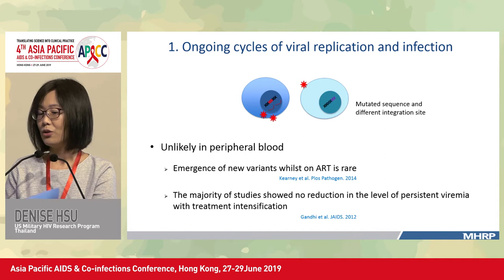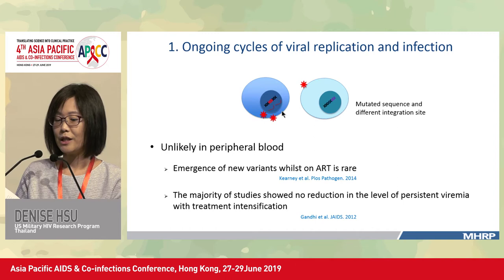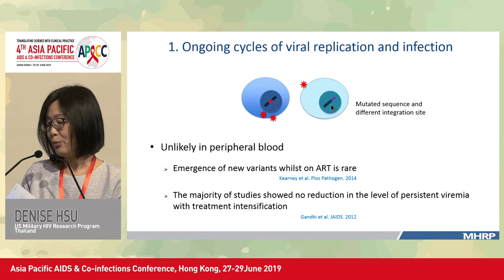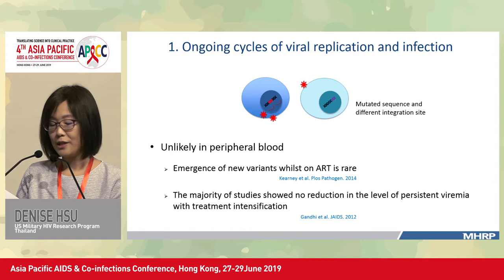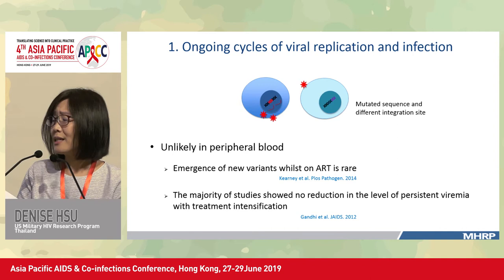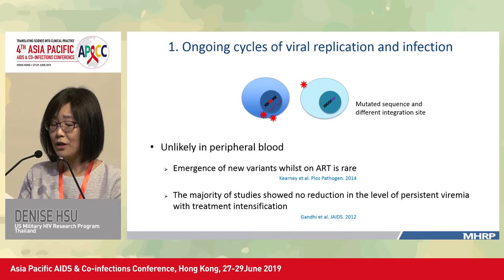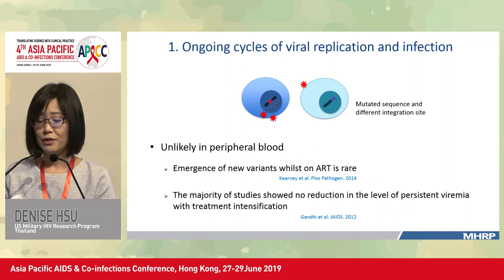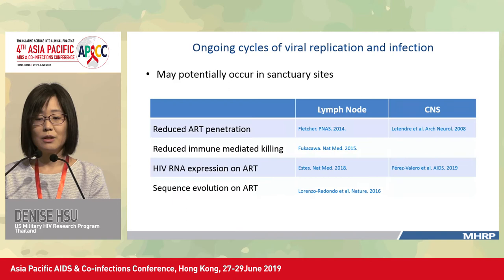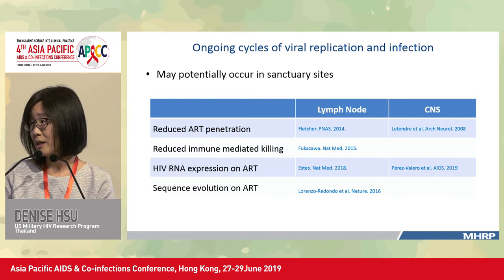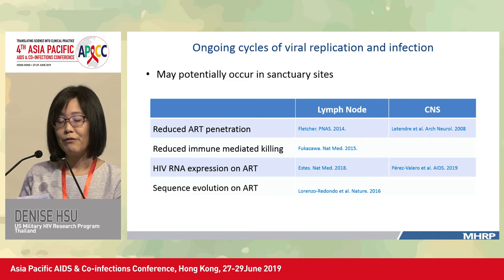Regarding ongoing cycles of viral replication and infection: if this occurs, we would expect mutated sequences due to the error-prone HIV reverse transcriptase, and proviruses integrated at different sites — in contrast to clonal proliferation. Ongoing cycles of viral replication are unlikely in the peripheral blood, as emergence of new variants whilst on ART is rare and the majority of studies show no reduction in persistent viremia with treatment intensification. However, this may occur in sanctuary sites such as the lymph node and CNS, which have evidence of reduced ART penetration.